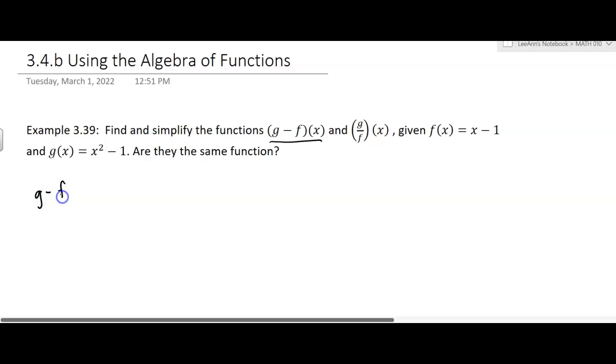Well, g minus f of x is equal to g of x minus f of x. So you take them individually and subtract them. Well, we know what g of x is. It's x squared minus 1. And I can put parentheses around that. That might be helpful.